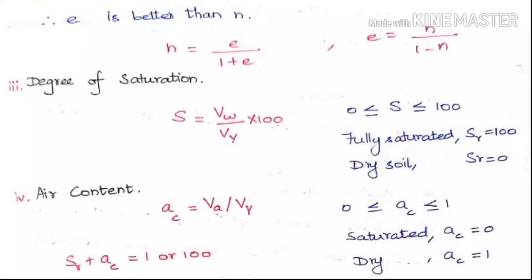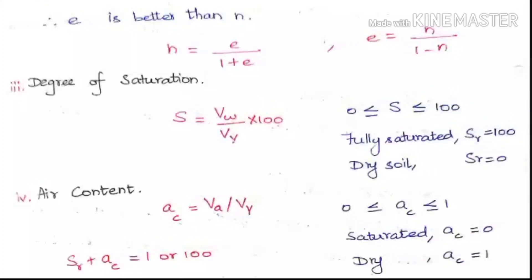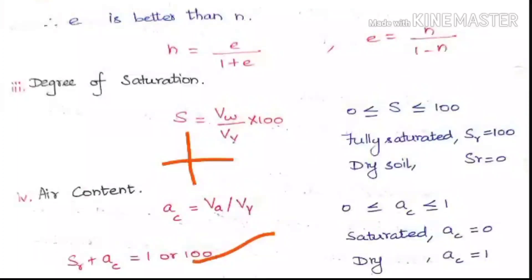Degree of saturation and air content together give 100%, because both have VV (volume of voids) as the denominator, while their numerators are VW and VA respectively. We know that volume of water plus volume of air equals volume of voids, so combining degree of saturation and air content gives 100% or 1.